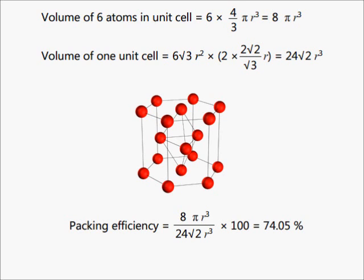Therefore, packing efficiency of the HCP structure is equal to 74.05%. It is thus proved that the packing efficiency of CCP and HCP structures are exactly the same.